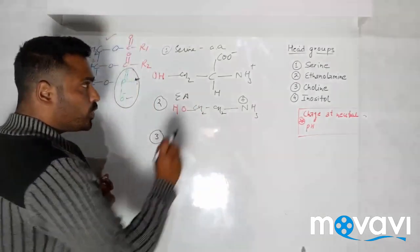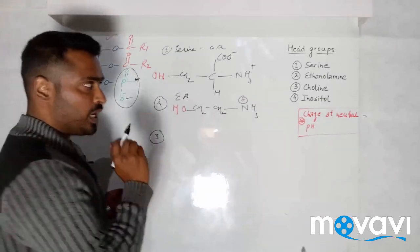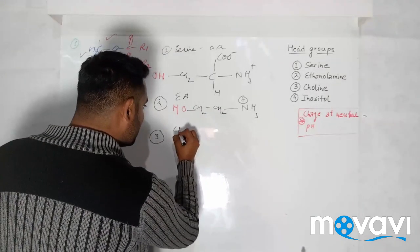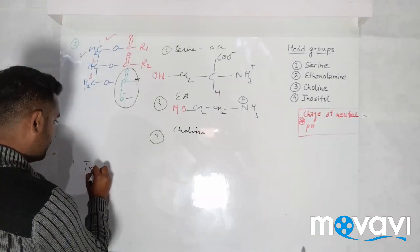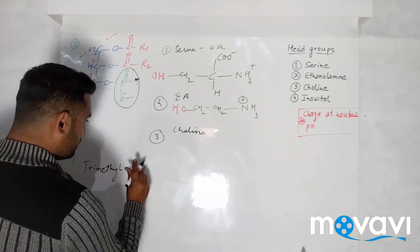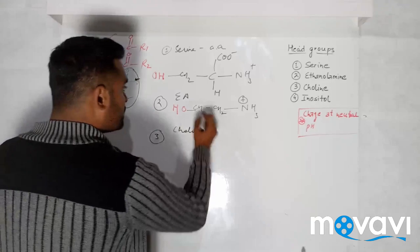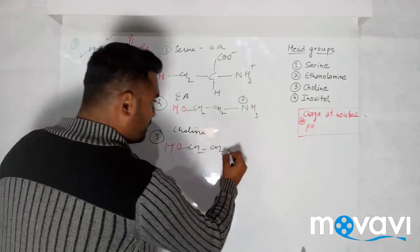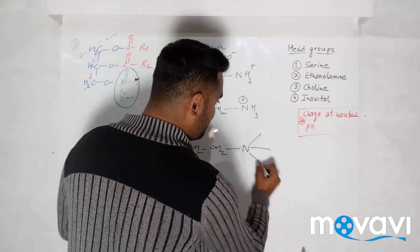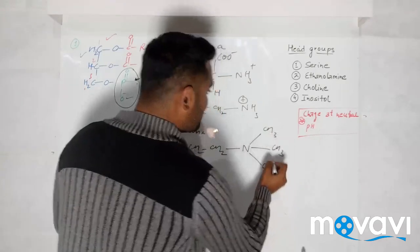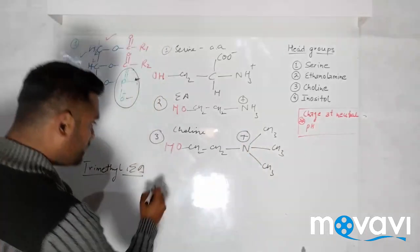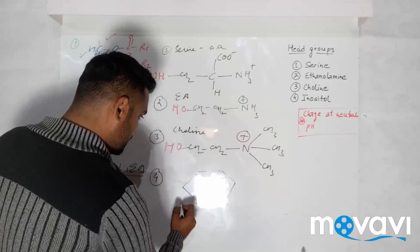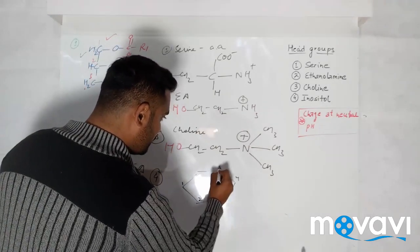The fourth alcohol is inositol, which is a sugar — a 6-carbon ring containing hydroxyl groups at positions first, second, third, fourth, fifth, and sixth carbons, with these hydroxyl groups pointing upward.